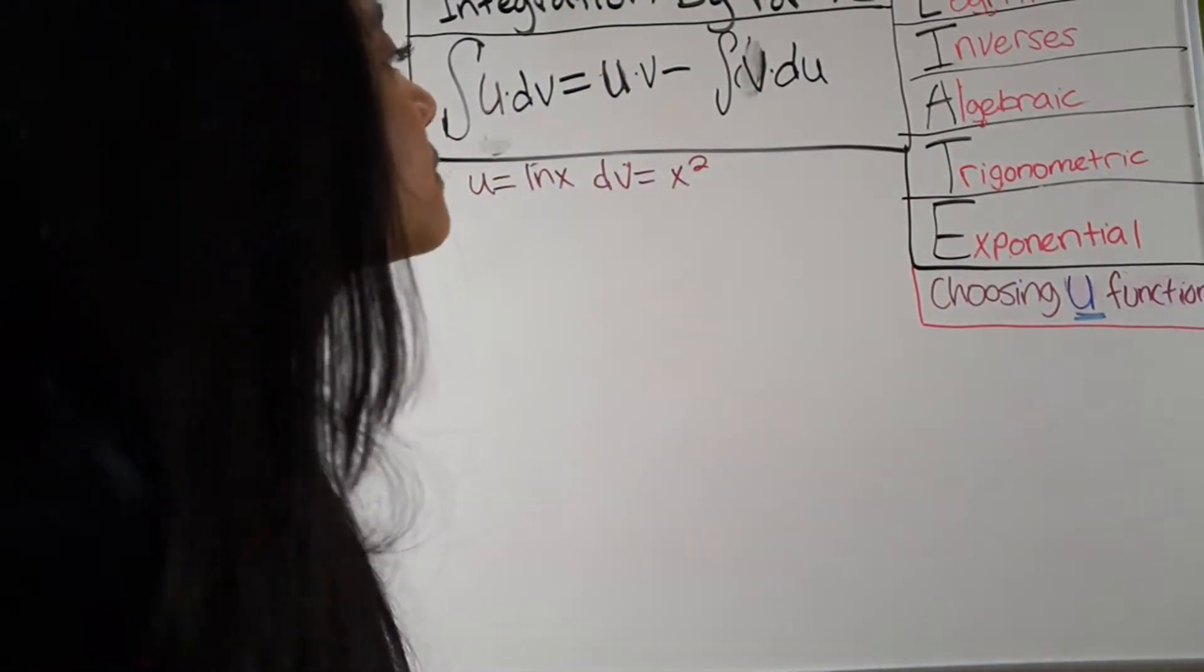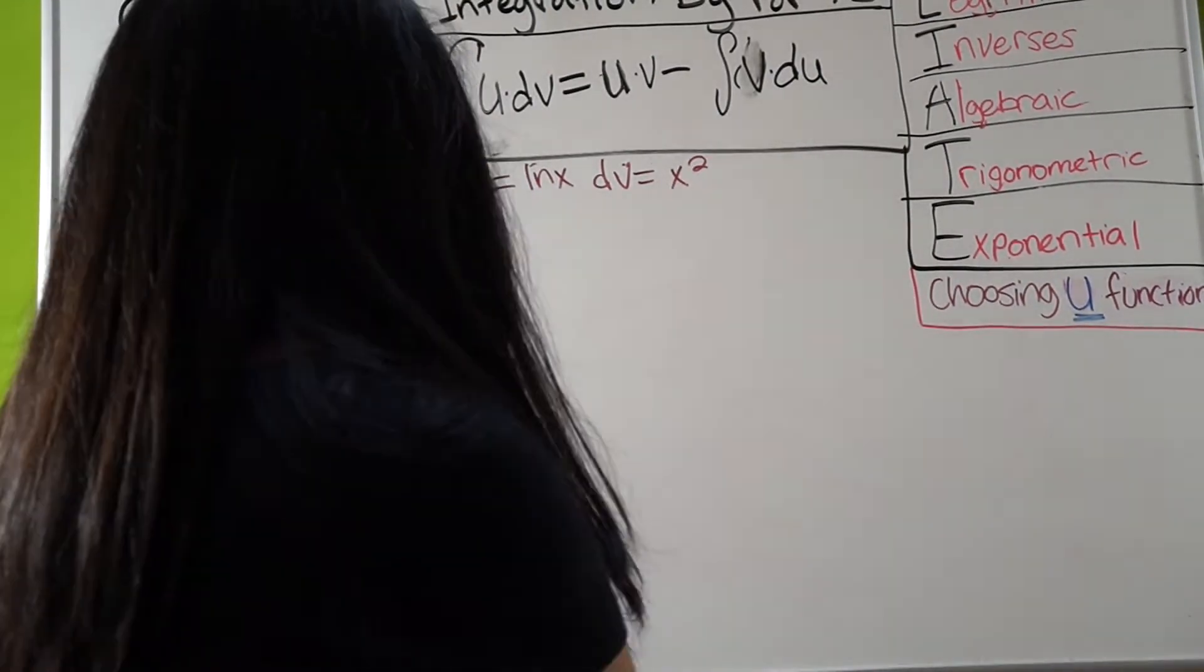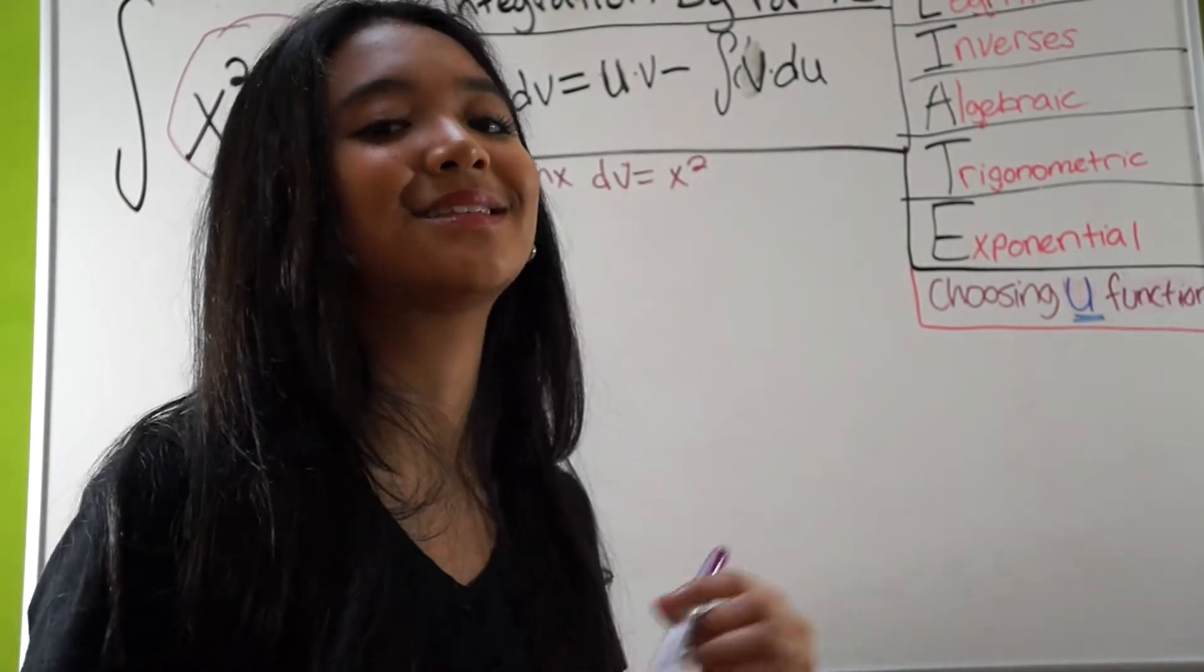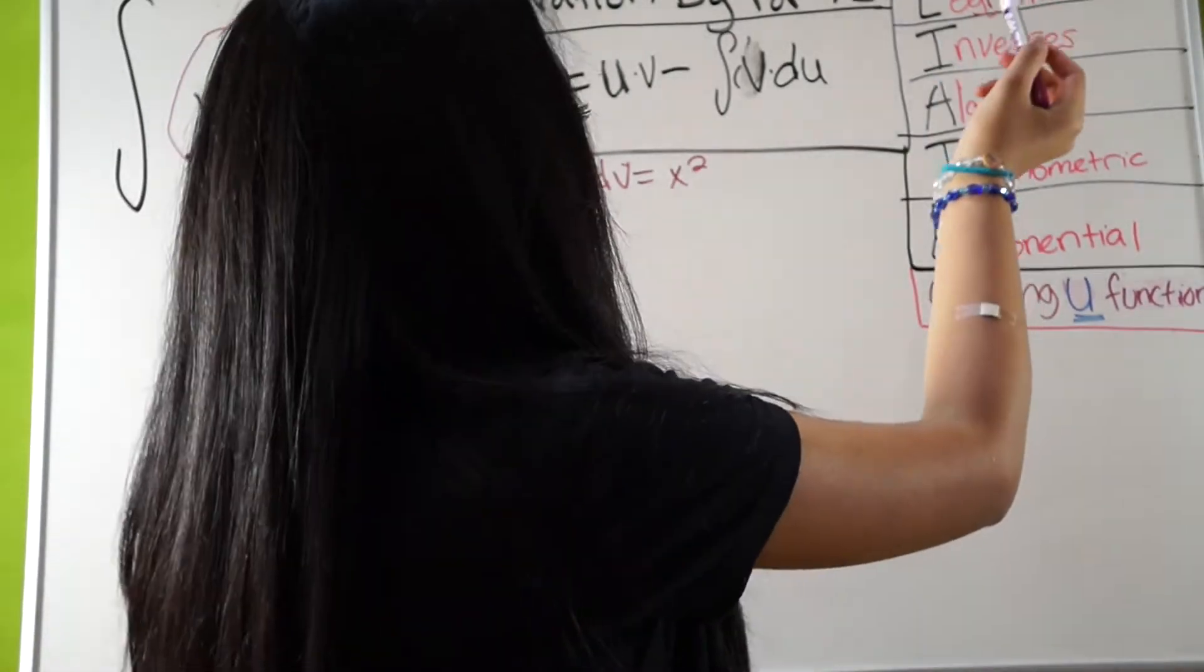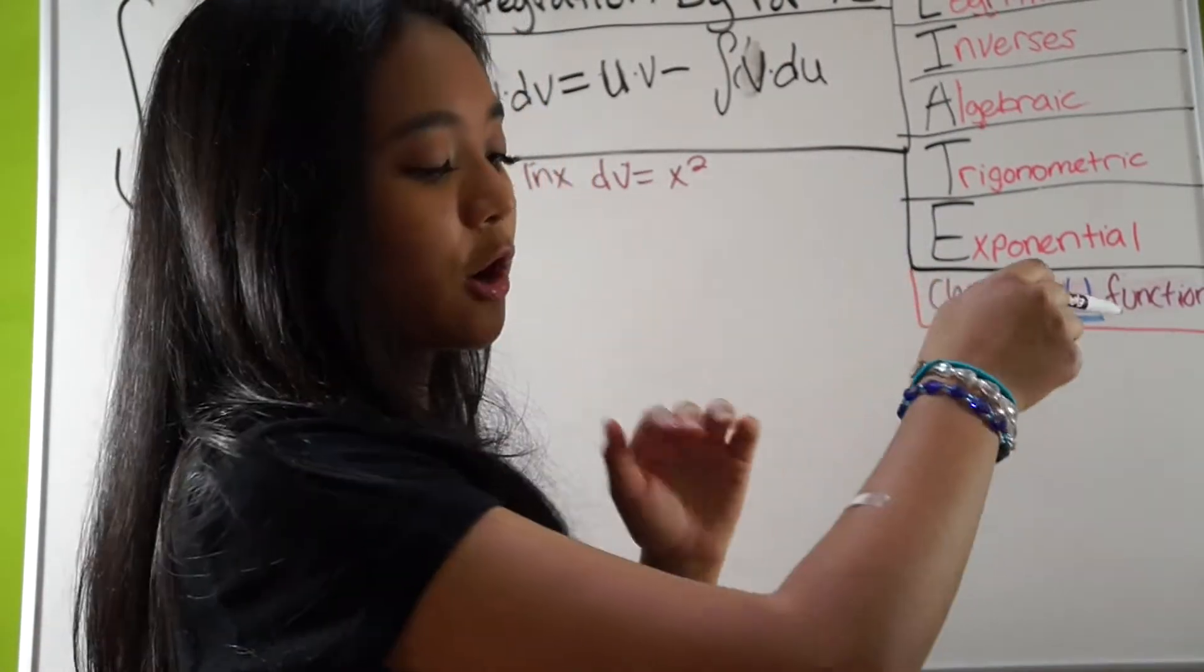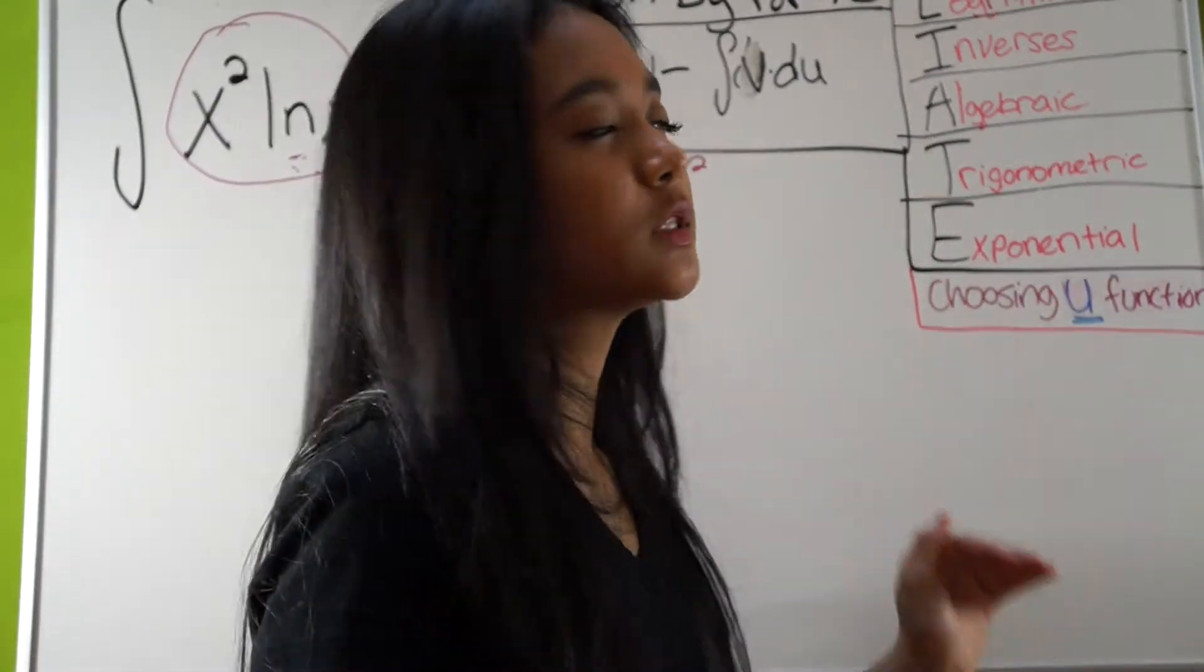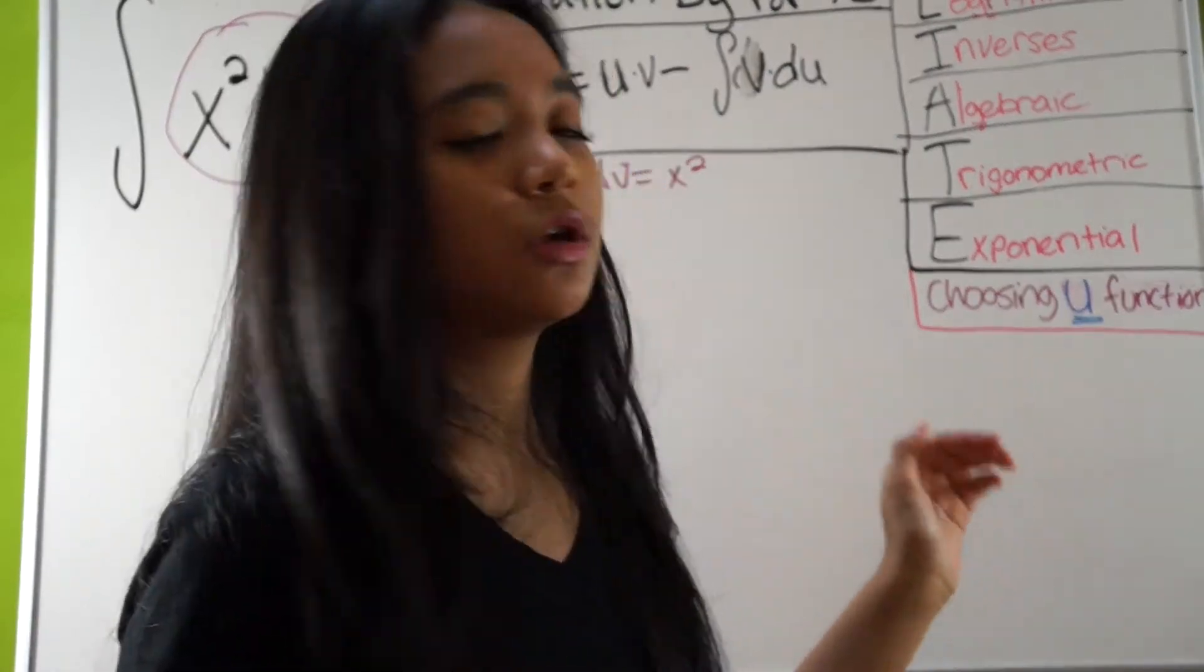Why, you ask? Because there's this little, I'm going to call it a mnemonic device. So, there's this little mnemonic device called liate. Is that how a mnemonic device works? I don't know. Comment below how a mnemonic device works, because I don't know. So anyway, we have this sort of little, I'm going to say acronym, called liate, which is logarithmic, inverses, algebraic, trigonometric, exponential functions. This is all in order.